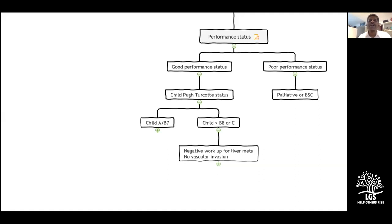On transplant criteria, there are several criteria. The most well-established is Milan, followed by UCSF. Currently we follow the up-to-seven criteria, and some units in India follow any size, any number criteria. Once transplant criteria are satisfied, you proceed with transplantation. If not met despite negative workup and no vascular invasion with poor liver function, palliative or best supportive care is the only option.